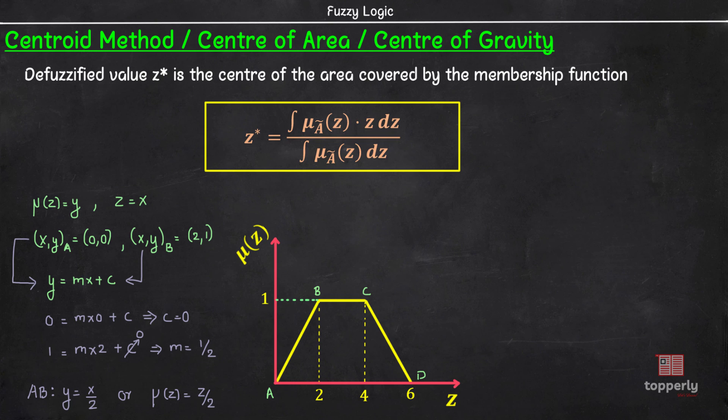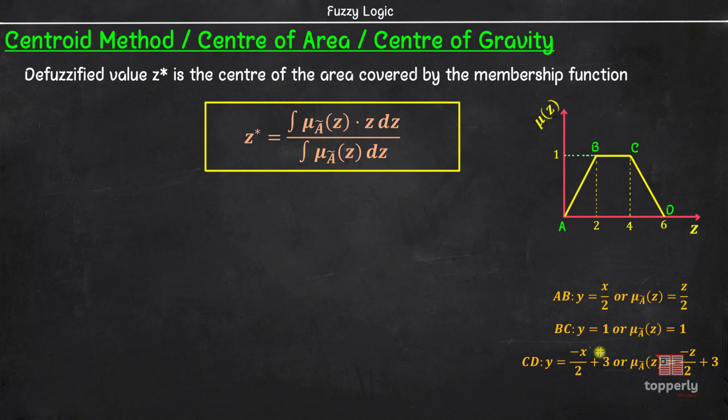Similarly, equation for line BC is given by μ(z) = 1 and line CD by μ(z) = -z/2 + 3.